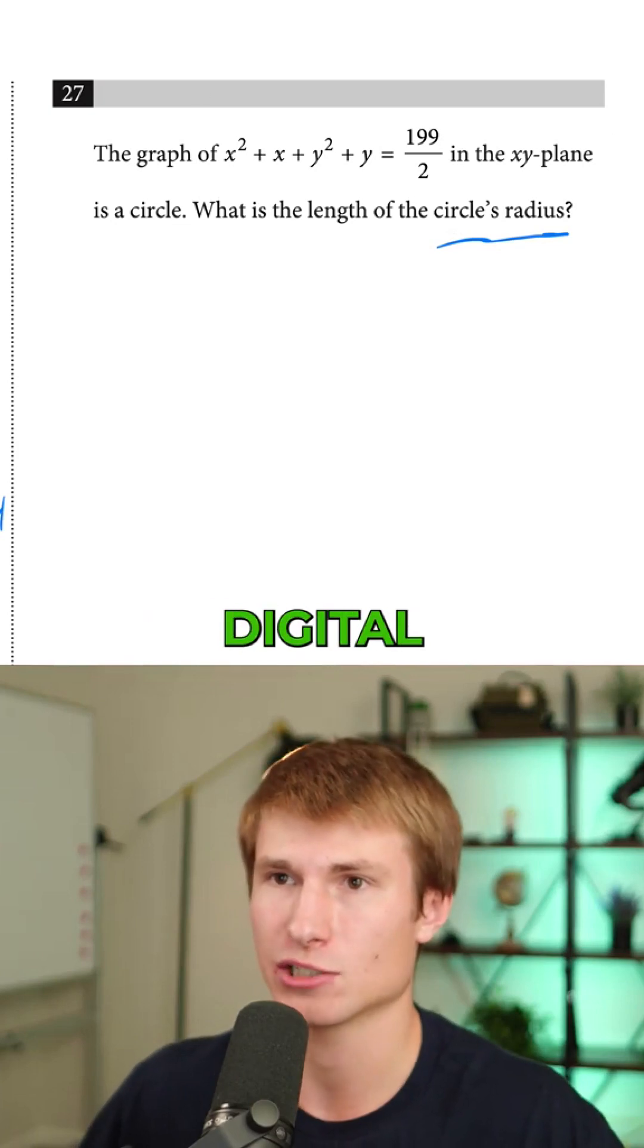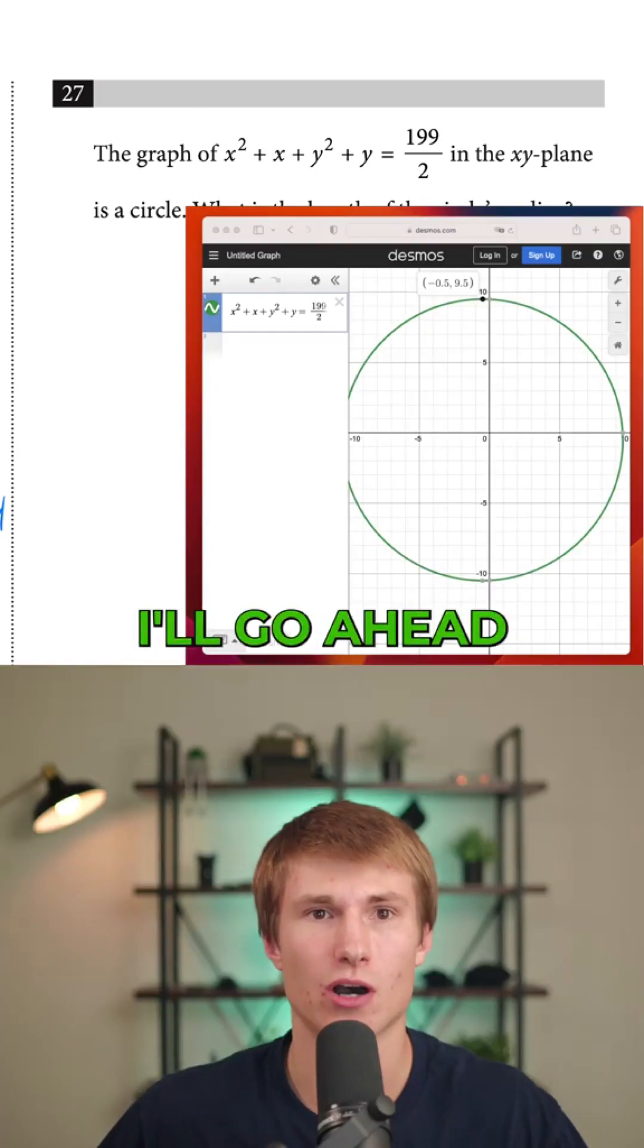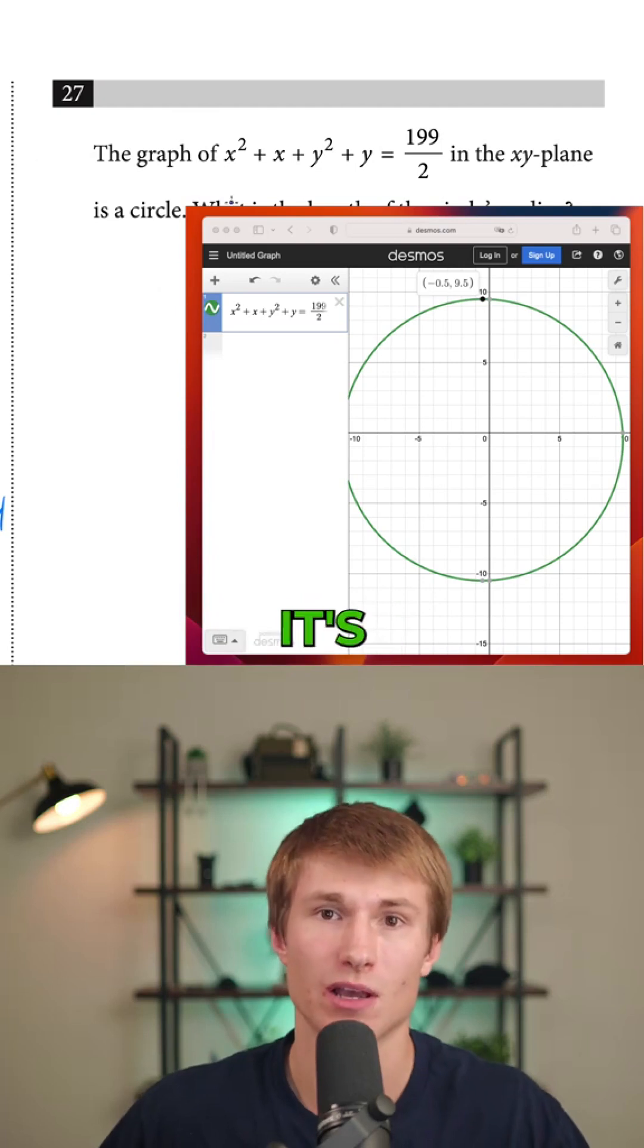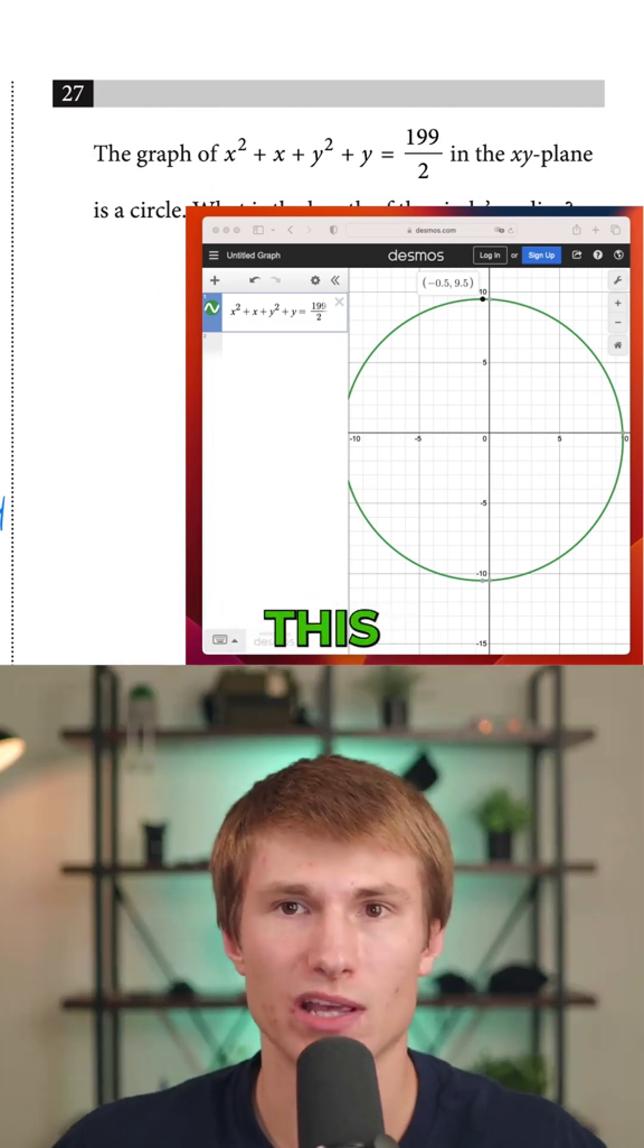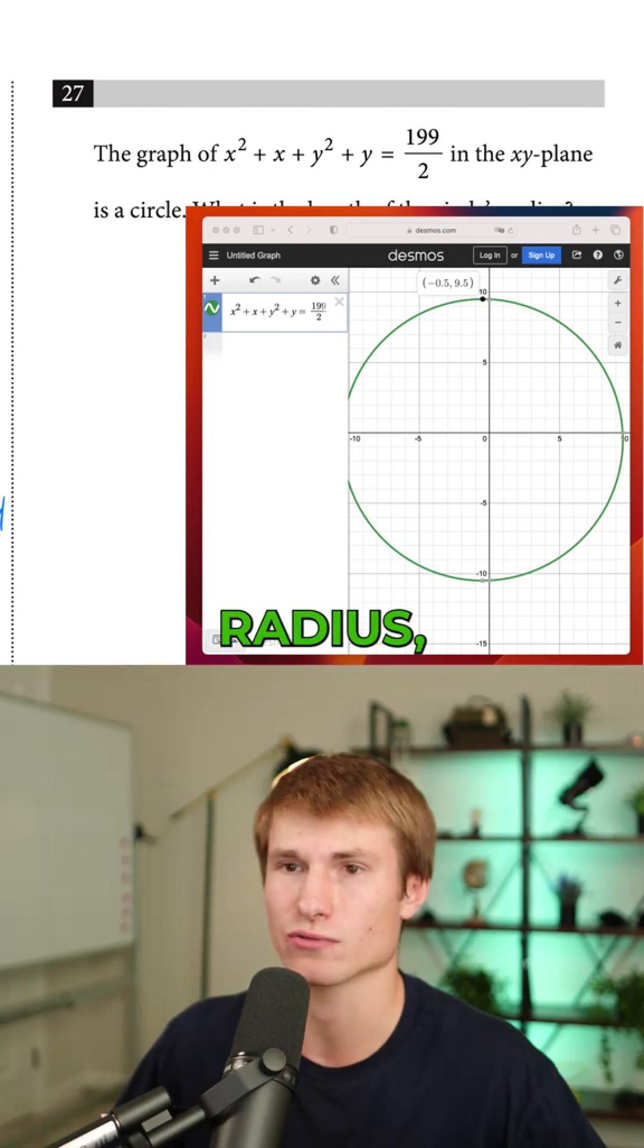The graphing calculator on the digital SAT works just like Desmos. I'll show you how I would set this up. It's really simple. All I do is put this equation into the graphing calculator. Since I'm looking for the circle's radius,